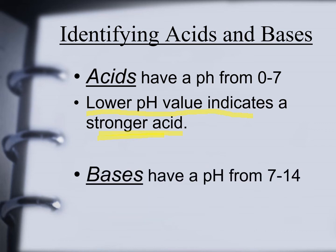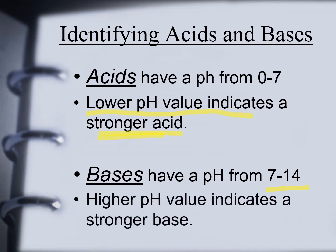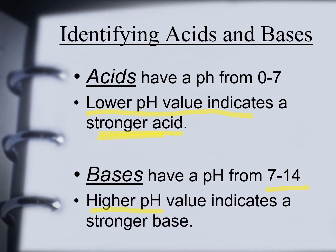How about bases? Bases have a pH from 8 to 14. A higher pH value indicates a stronger base — meaning if your solution has a pH of 10, 11, 12, 13, or 14, it has a higher pH value and is a stronger base.